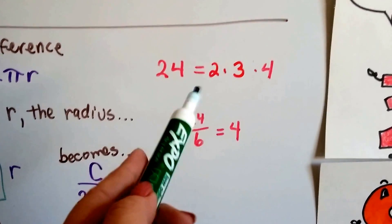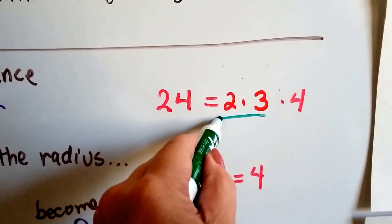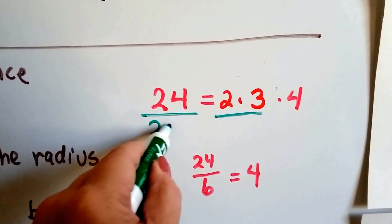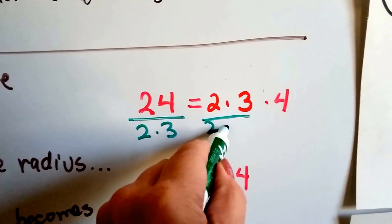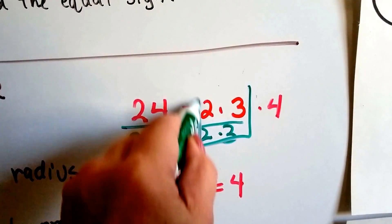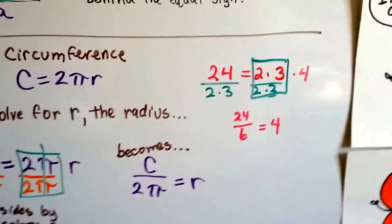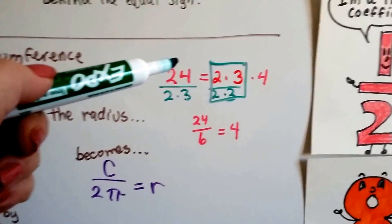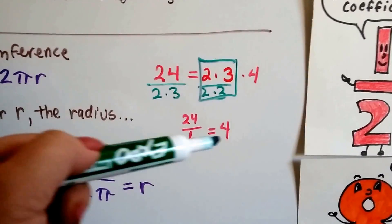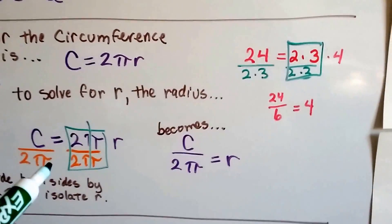What we could do is take this and put 2 times 3 under both of these, cancel this out as a 1, because it's got the same numerator and denominator, and now this becomes 24 over 6. And it equals 4. That's all we did.